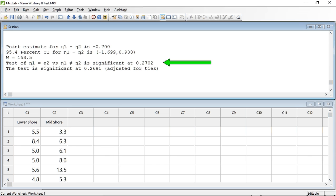So, a probability of 0.2702 is larger than 0.05, so we do not reject the null hypothesis, and our conclusion is that there is no significant difference between the median shell height of the periwinkles from the mid and lower shore.